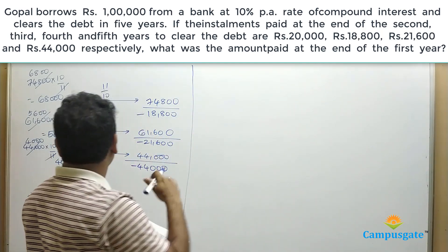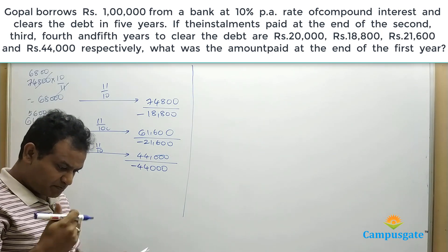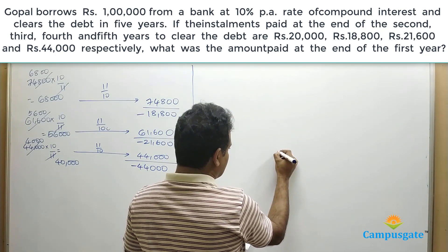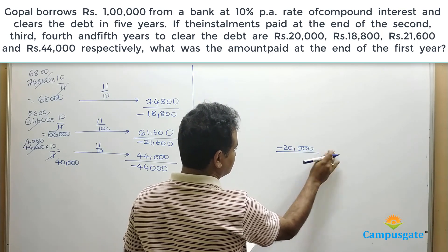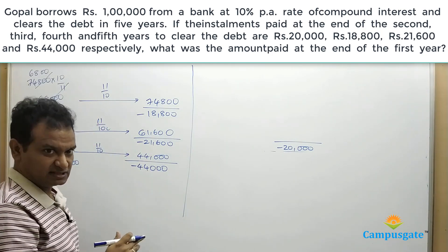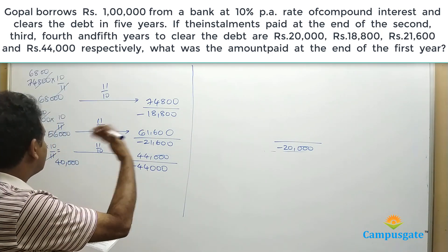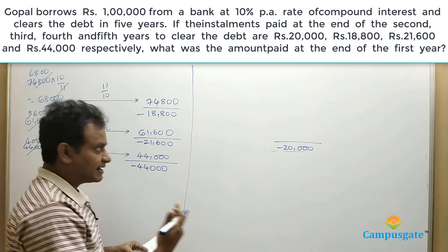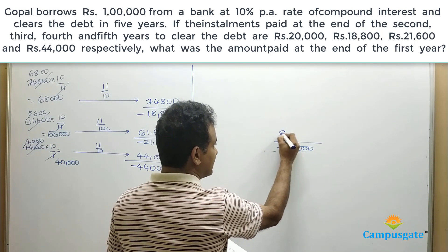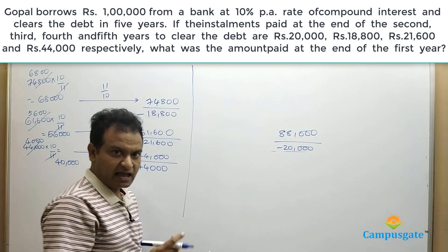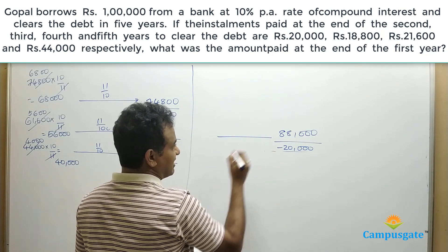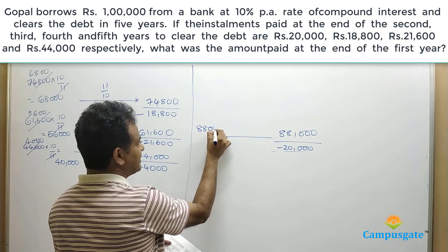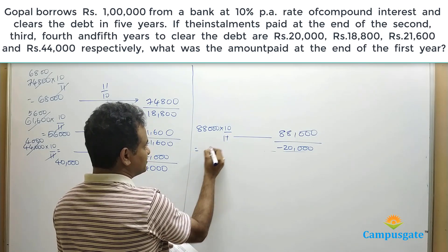The 68,000 at the beginning of the third year came after he paid 20,000 at the end of the second year. So the amount at the end of the second year is 20,000 plus 68,000, which equals 88,000. To find the principal at the beginning of the second year, we multiply 88,000 by 10 by 11, which gives 80,000.